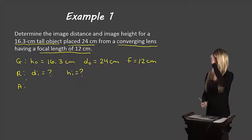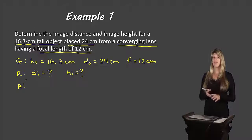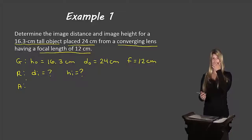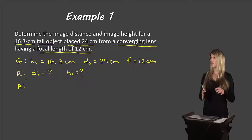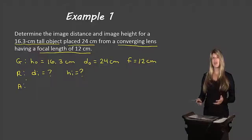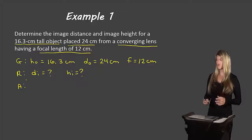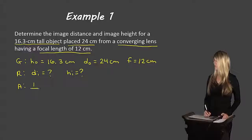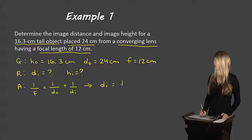For our analysis, we're given information about height, distance, and focal length. If we use the magnification equation, we wouldn't have enough information — we have no magnification value and not enough height or distance info. However, with the object distance and focal length, we can use the thin lens equation to find the image distance. So for Part A: 1/F = 1/DO + 1/DI, and rearranged for DI: DI = (DO × F) / (DO − F).